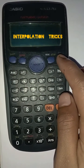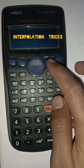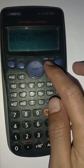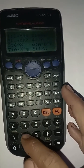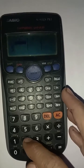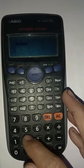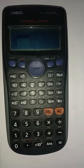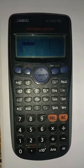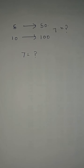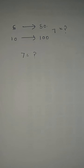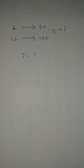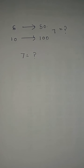Press on, then press modes, then press 2, then press again to output values. For example, 5 is equal to 50, and 10 is equal to 100, then 7 is equal to — we need to calculate.